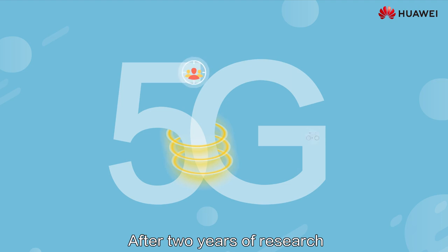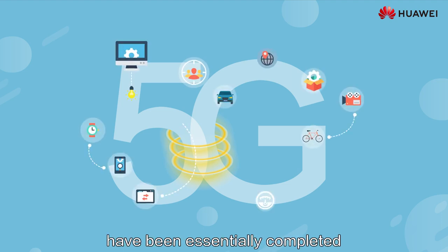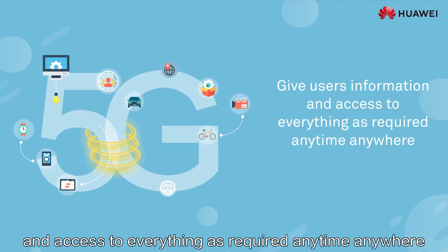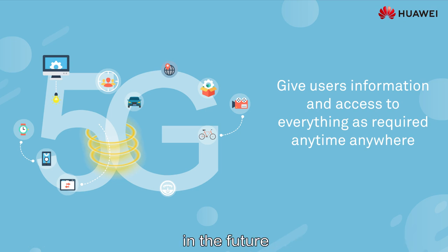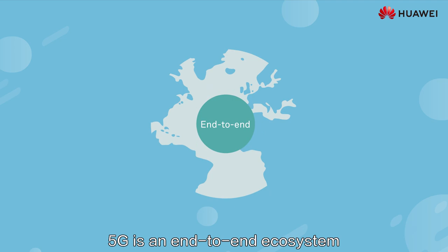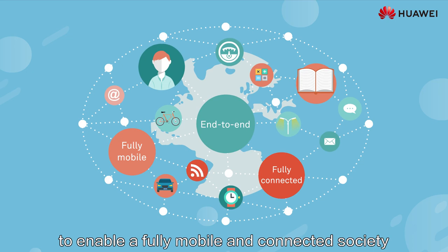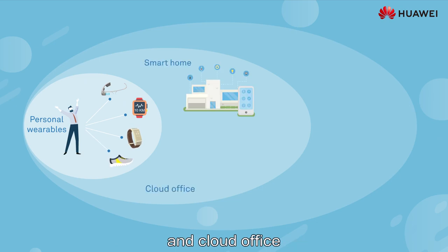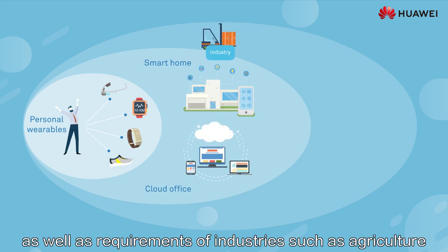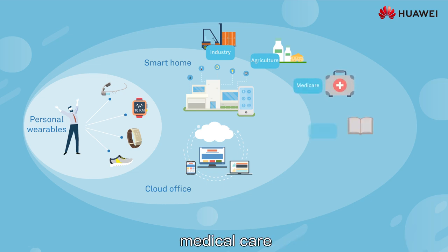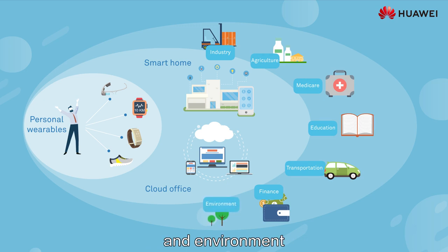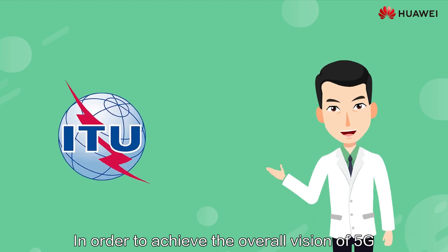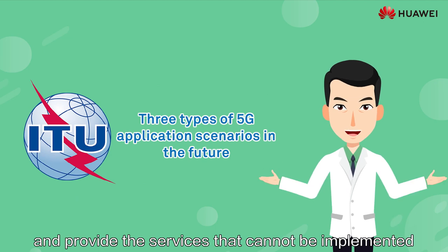After two years of research, ITU's research on the 5G vision has been essentially completed. 5G is expected to give users information and access to everything as required anytime, anywhere in the future. 5G is an end-to-end ecosystem to enable a fully mobile and connected society. 5G can meet the full interconnection requirements of personal wearable devices, smart home and cloud office, as well as requirements of industries such as agriculture, medical care, education, transportation, finance, and environment.